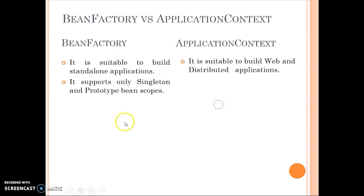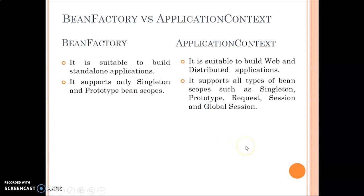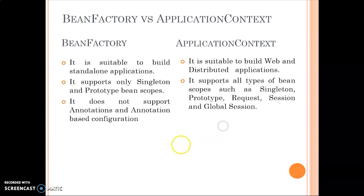Looking at their differences: BeanFactory is suitable only for small standalone applications, whereas ApplicationContext is used for web, distributed, or enterprise-level applications. BeanFactory supports only singleton and prototype bean scopes, whereas ApplicationContext also supports request, session, and global session scopes, which are needed to cater to web and distributed applications.